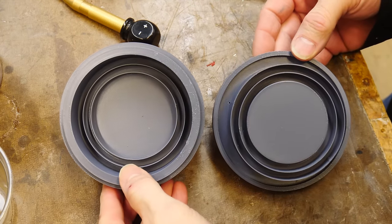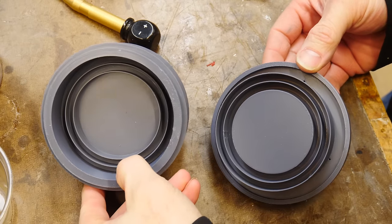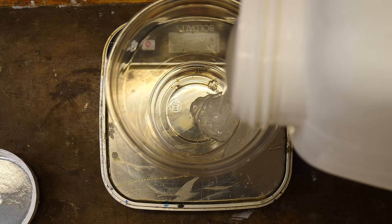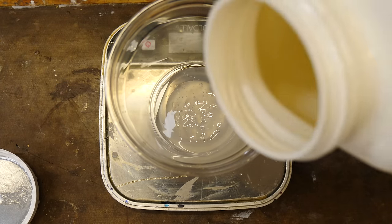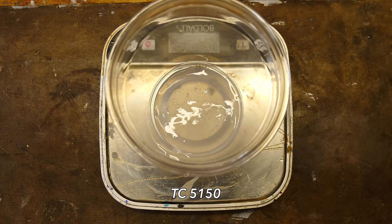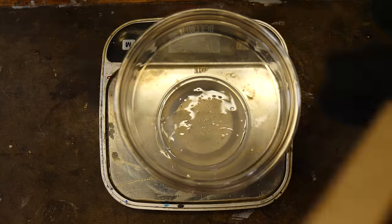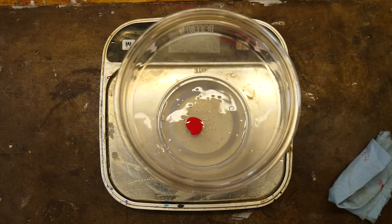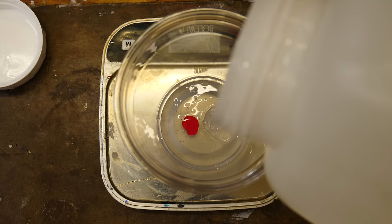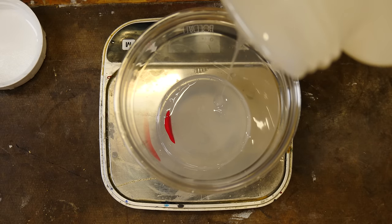So these are the two printed molds, the top and the bottom, and we're going to use some BJB 5150. This is a platinum 50 Shore A silicone with some BJB colorant in there as well.